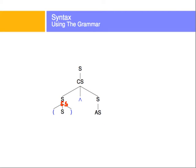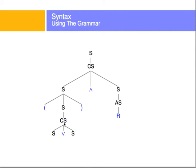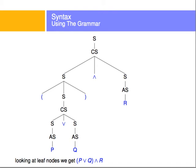The complex sentence expands to parentheses-sentence-parentheses. I expand that inner sentence into another complex sentence, and the atomic sentence into the symbol R — all terminals are shown in blue. That complex sentence expands into sentence-or-sentence, and those sentences expand into atomic sentences P and Q. Putting together all the leaf nodes in order gives us: (P or Q) and R, which is a perfectly valid logical expression.